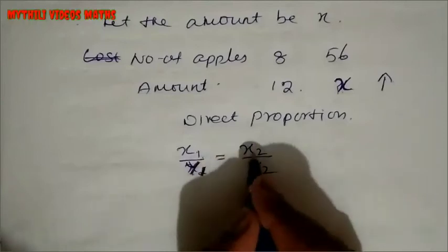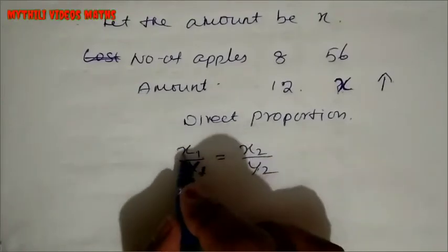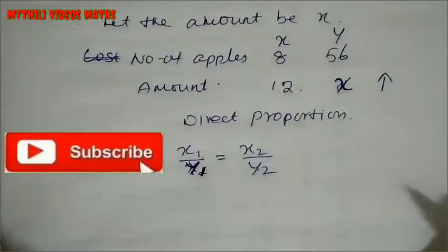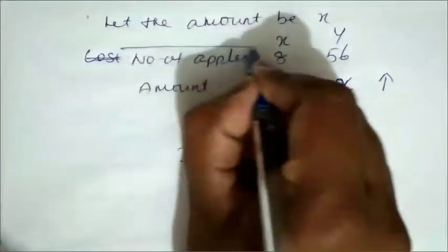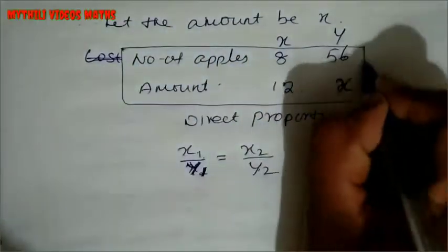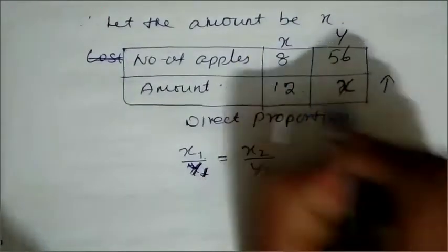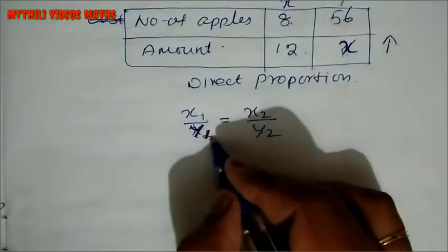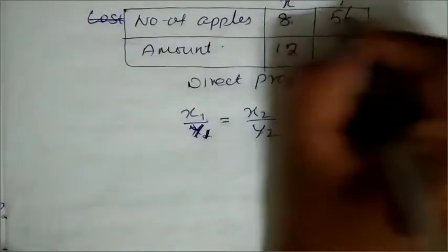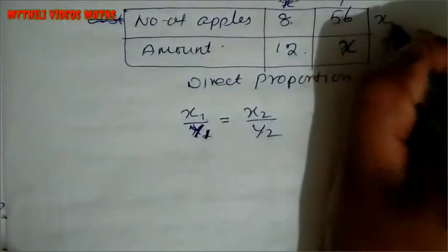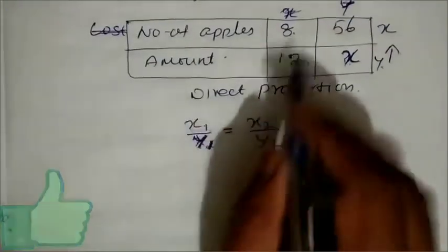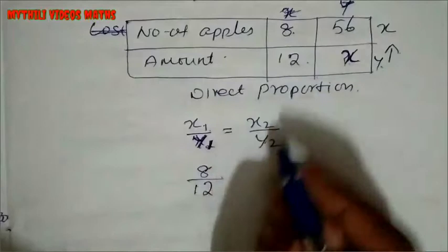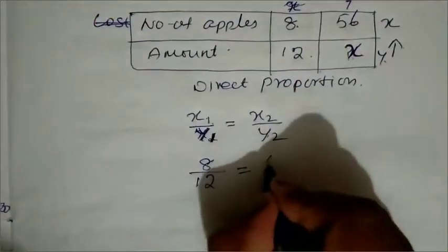Using x1/y1 = x2/y2: x is the apples column and y is the cost column. So x1 is 8, y1 is 12 — wait, x1 is 8 (apples), y1 is 56 (cost), x2 is 12 (apples), y2 is x (unknown cost). So: 8 by 12 equal to 56 divided by x.